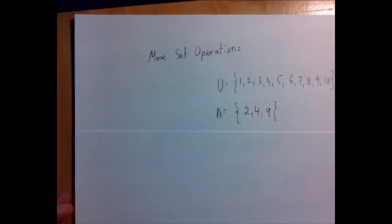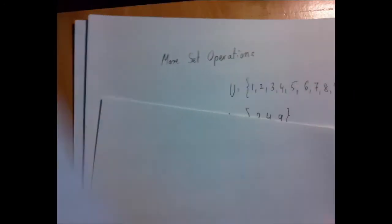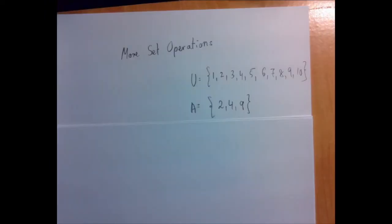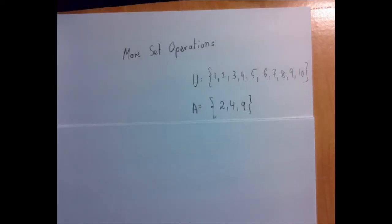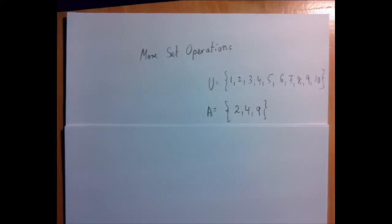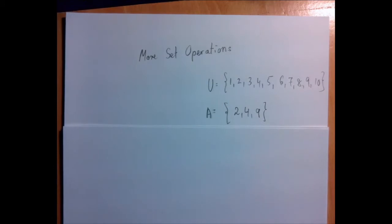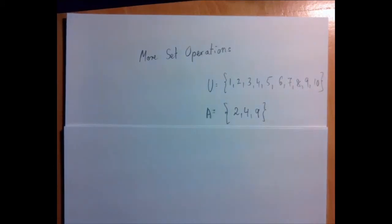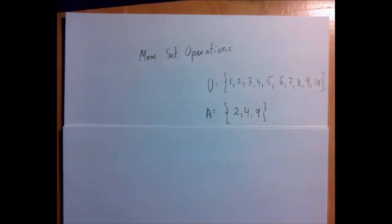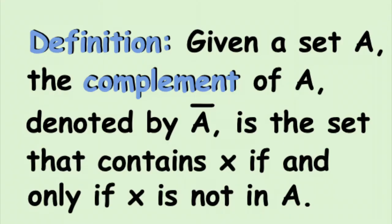Now we're going to look at some more set operations. Until now, the universal set seemed unnecessary — never have I really used what the universal set is — but now it's going to come into place. The complement of a set is the set of all elements in the universal set that are not in the set.